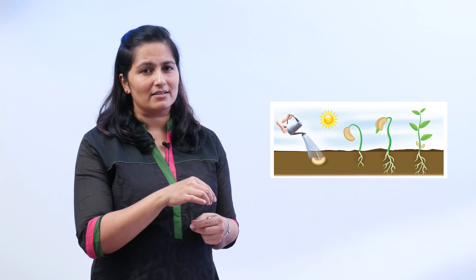Birds lay eggs and fishes lay eggs. Once the egg hatches, the babies come out and grow into a fully grown fish or bird. What about plants? Yes, they also grow — from a seed sown in the soil, it grows into a sapling and then into a big plant, sometimes a big tree.